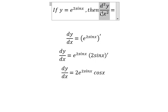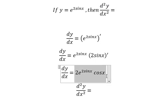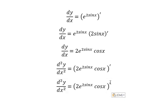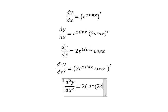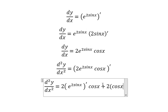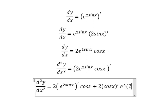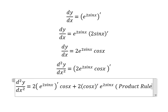Now let's find the second derivative of this one. That means we need to find the derivative of this one. In this situation, we need to do the derivative of e to the power of two sin x, multiplied by cosine x, and then the derivative of cosine x multiplied by e to the power of two sin x. This is about the product rule of the derivative.